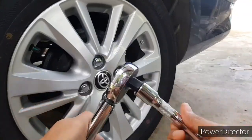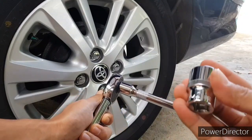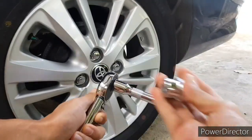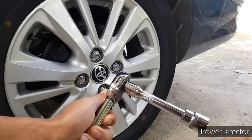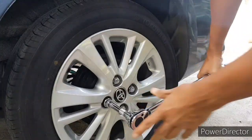Attach the extension and 21mm socket. Then don't forget to check the dial. Tighten the wheel nuts until you hear a click like this.